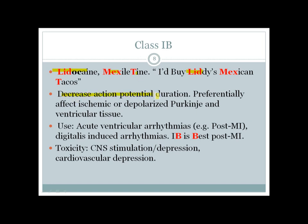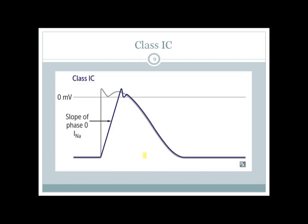Class 1b agents decrease action potential duration and preferentially affect ischemic or depolarized Purkinje fiber and ventricular tissue. This makes them the best option for post-MI arrhythmias — especially acute post-MI ventricular arrhythmias. They can also be used for digitalis-induced arrhythmias. Toxicity includes CNS stimulation or depression, and like almost all antiarrhythmic drugs, cardiovascular depression.